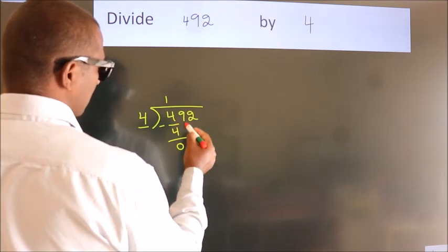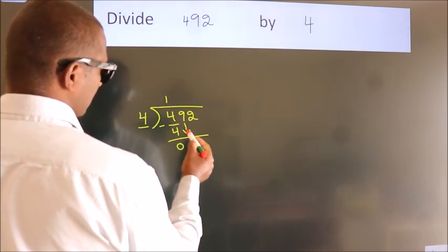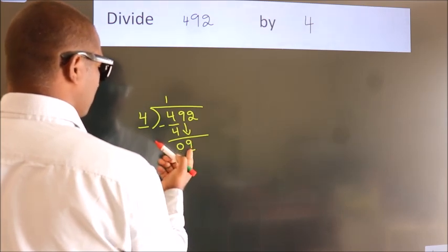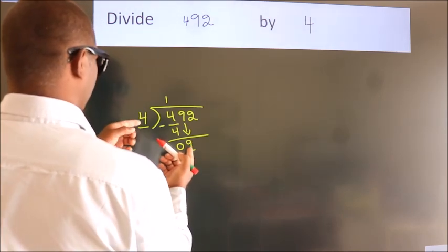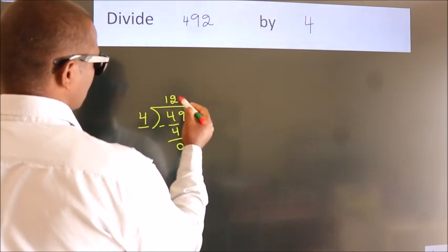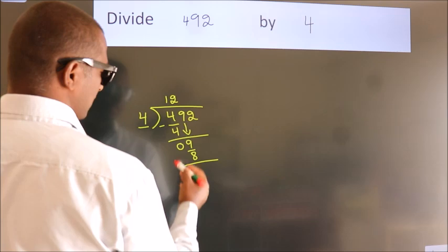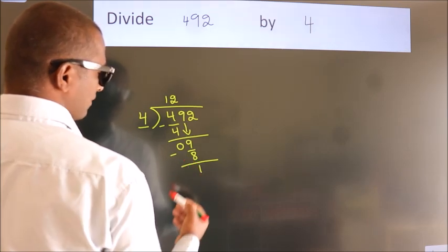After this, bring down the next number, so 9 down, so 9. A number close to 9 in the 4 times table is 4 times 2, which is 8. Now, we subtract, we get 1.